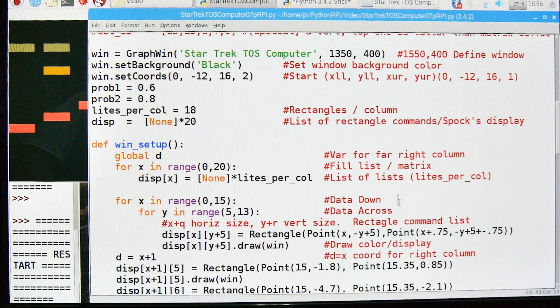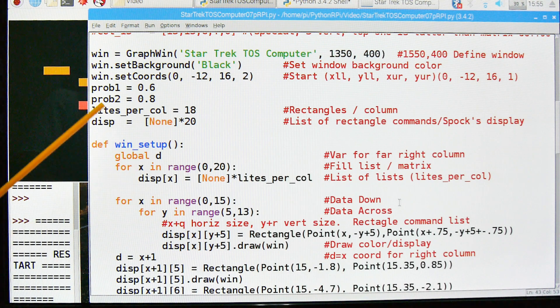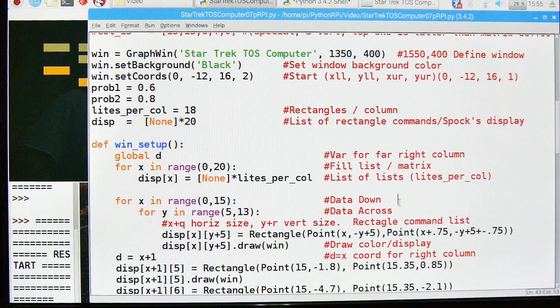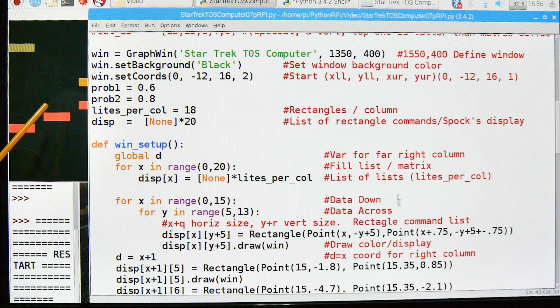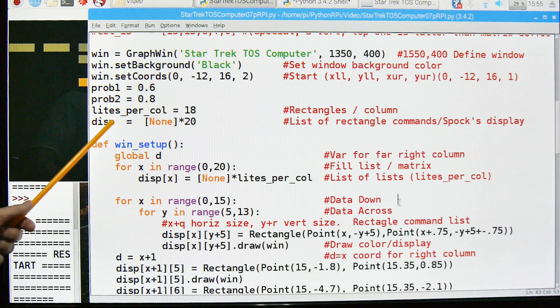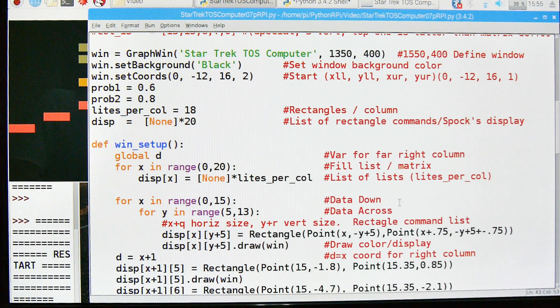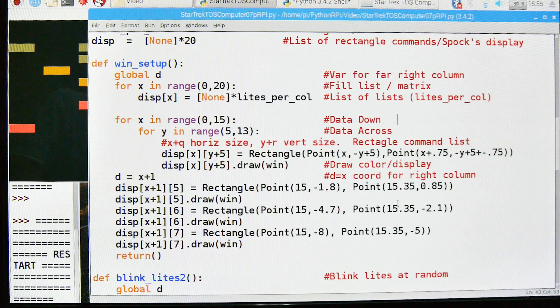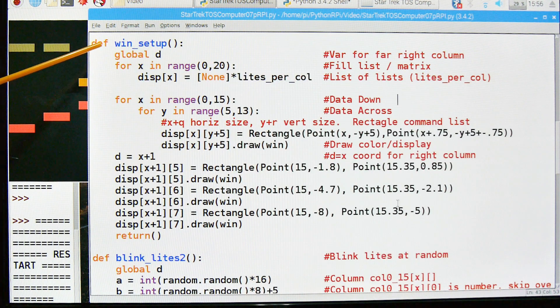Then we have two probabilities and this is for our randomness. I used two probabilities so that I could flash these in kind of a different randomness so they wouldn't look too mechanical. And lights per column. We have 18 lights per column. And we have a list of display items.